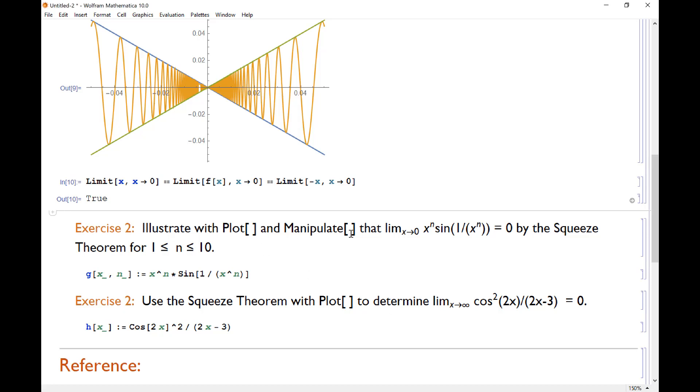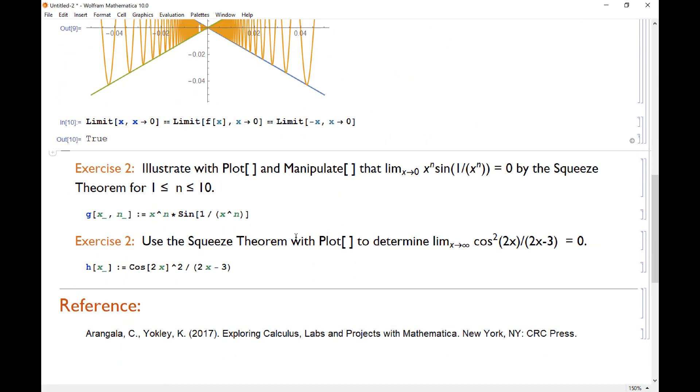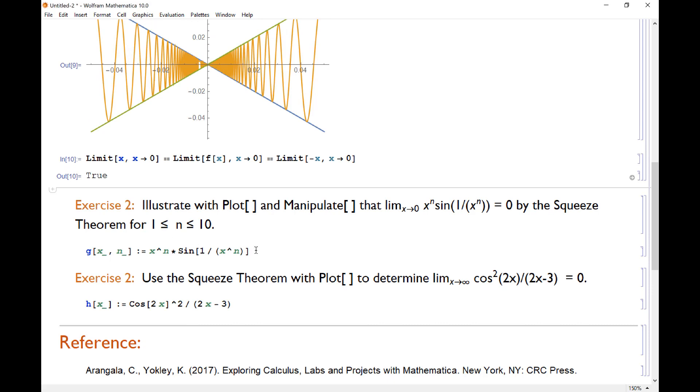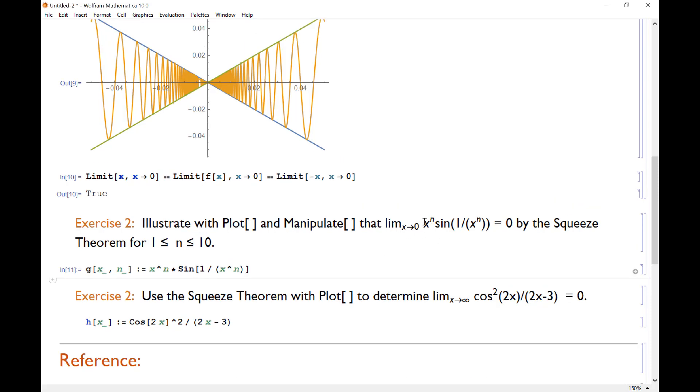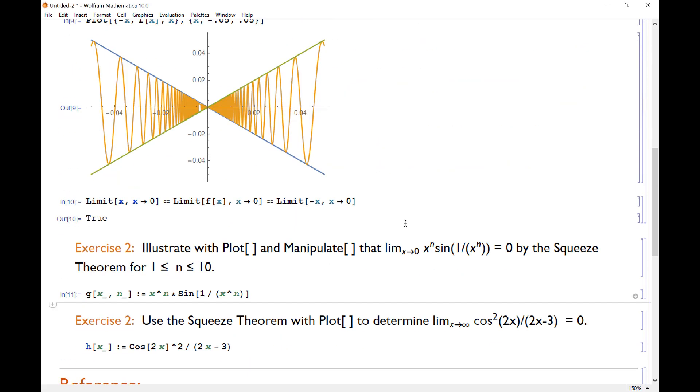Now with exercise 2, we want to illustrate with plot and manipulate that, now we have x^n * sin(1/x^n) = 0. So now we're taking what we just did, but now we're raising it to the nth power. So I already have a two variable function defined here, g(x,n), where n is a variable and x is a variable. And our reasoning is going to be the same. I already know the two functions that bound this on the top and the bottom. We could go through this exact statement up here. We could say that since -1 is less than or equal to sin(1/x^n), less than or equal to 1, multiply everything by x^n. And we'll still keep this inequality, and so it will work the same way.